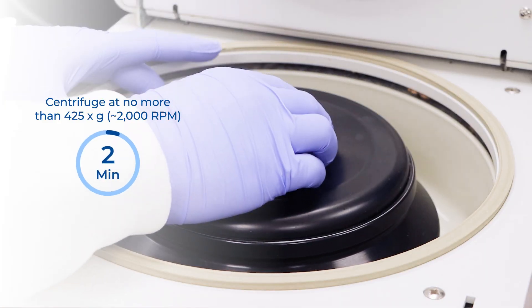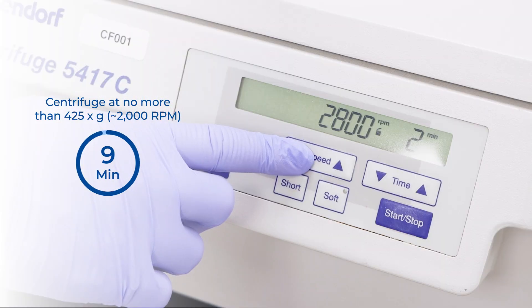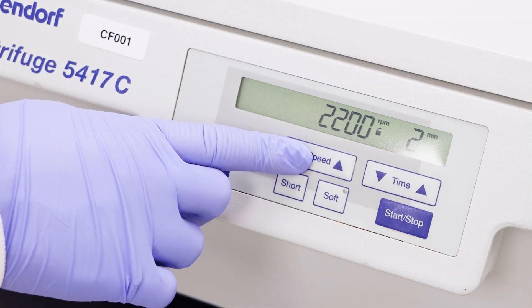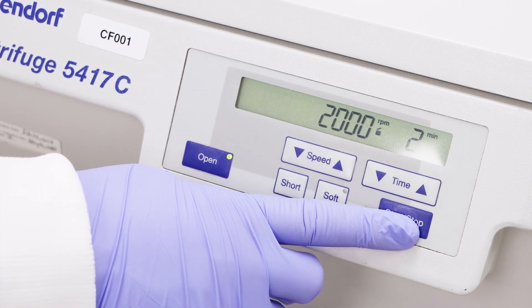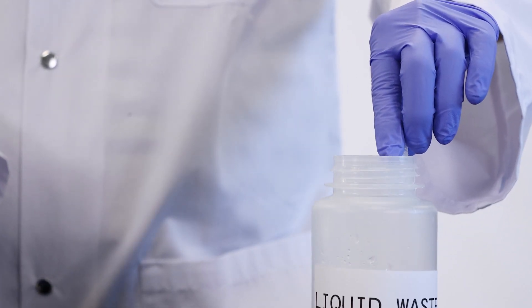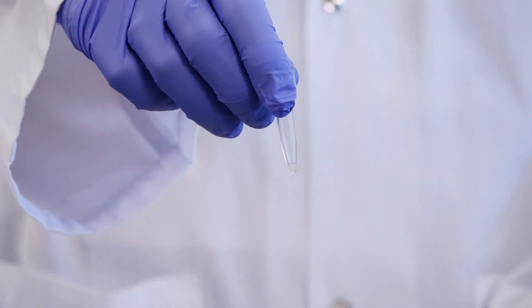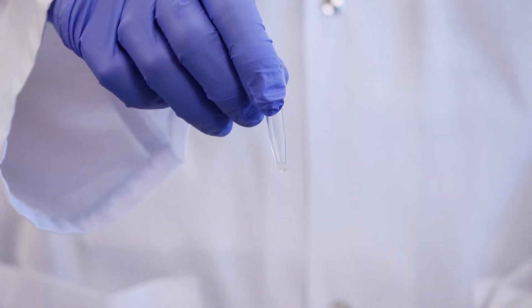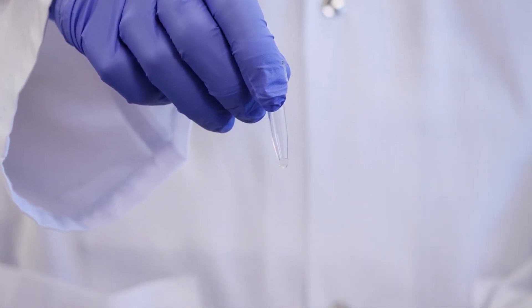And centrifuge at no more than 425g or 2000rpm for 10 minutes to pellet cells. Carefully decant the supernatant. A few microliters of media may be left behind with the pellet in order to ensure that the pellet is not dislodged.